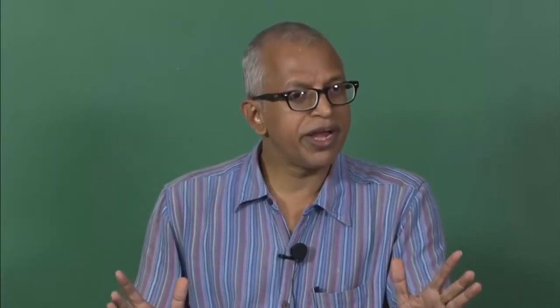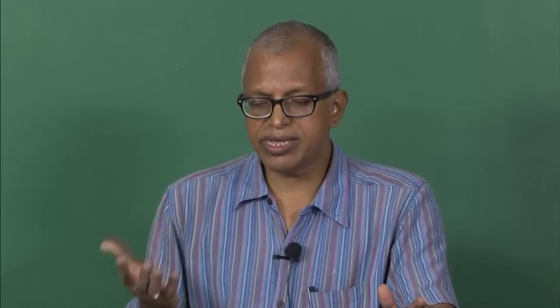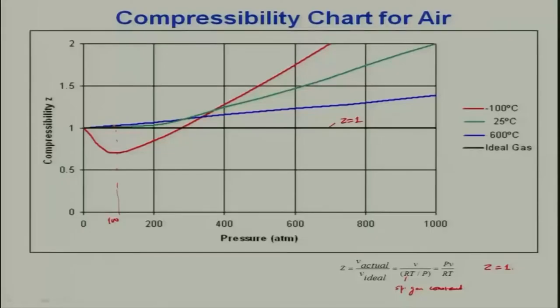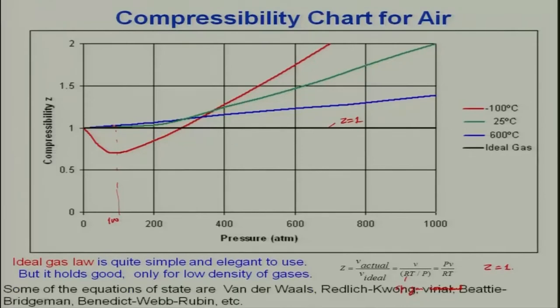In all practical purposes we will be using the ideal gas law. However, there are several other gas laws devised for real gases, such as Van der Waals, Redlich-Kwong, Beatty-Bridgeman, and Benedict-Webb-Rubin laws. We will use the ideal gas law for our calculations because it is simple and elegant, and it is good for low density gases. For combustion problems, since temperature is very high and pressure is within 100 atmospheres, we can use ideal gas law.